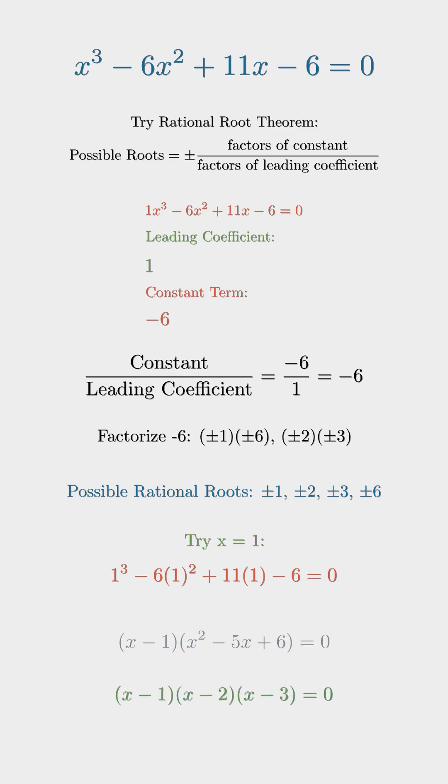Now we look at the quadratic part, x² - 5x + 6. This factors into (x - 2) times (x - 3).